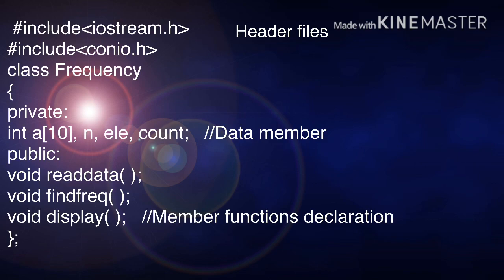First two lines are your header files. iostream.h is used for cout and cin. conio.h is used for getch and clrscr in your main function.